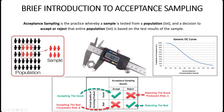Acceptance sampling is a practice where we take a sample from a population, test that sample, and then make a decision to either accept or reject that entire population based on the results. This originated in the 1930s and became popular in the 1940s, especially during the war when the U.S. government was testing munitions to make sure product quality met their standards.